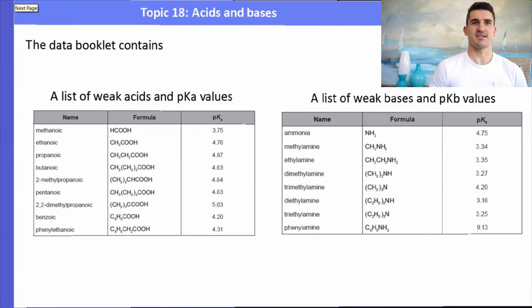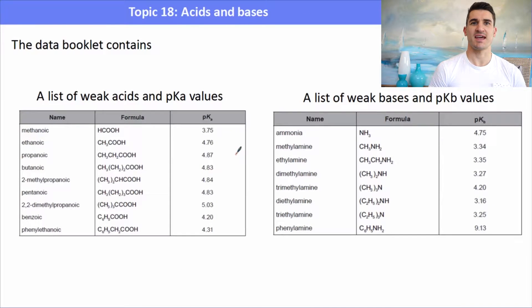The data book contains a whole list of weak acids and their pKa values, and you're only given the pKa, so you need to remember how to transpose from pKa to Ka. Now if we have a look at just the acids, we can see that methanoic acid has the lowest pKa value so that would mean it's the best acid. The one there at 5.03 would be the weakest acid because it has the highest pKa value. On the base side of things we also have a list of the bases. The one with the lowest pKb will be the best base or the strongest base, and the one with the highest pKb, that will be the weakest base. In this case phenylamine.